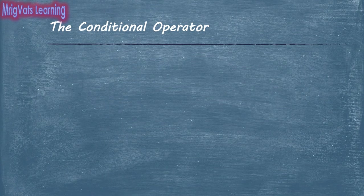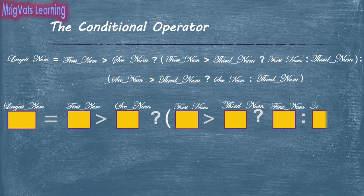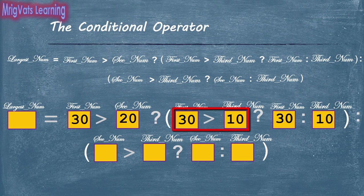For example, to find the largest number of three variables, you can use the expression: largestNum = firstNum > secondNum ? firstNum > thirdNum ? firstNum : thirdNum : secondNum > thirdNum ? secondNum : thirdNum. Here, you compare the first number with the second number. If it is greater than the second number, then you compare it with the third number. If it is even greater than the third number, then it is the largest number and is assigned to the largest number variable.